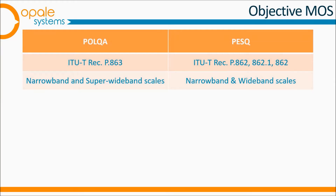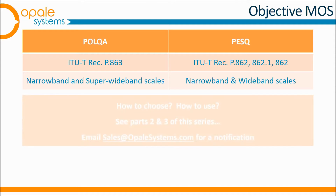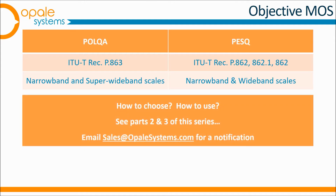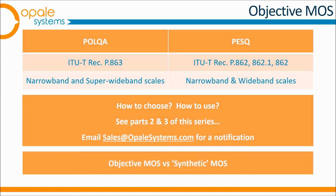Over the last 20 years, a series of algorithms have been developed all with the aim of predicting the outcome of subjective listening tests. The benefits of these objective methods are their relatively low cost and very short processing times compared to subjective testing. We'll be looking in more detail at two widely used objective metrics in the next two videos, and contrasting objective MOS with methods sometimes used to synthesize MOS in passive network monitoring software.